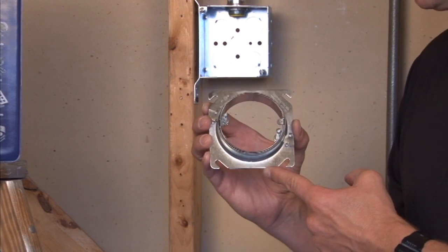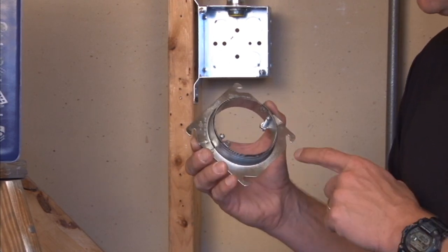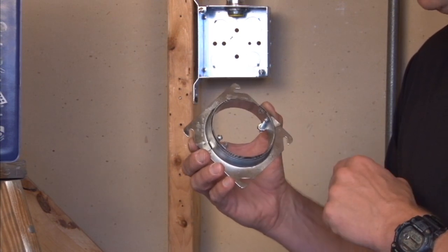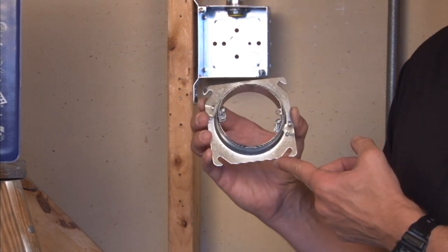This square to round mud ring has an adjustable inner ring and tapped 8-32 holes for most lighting applications.